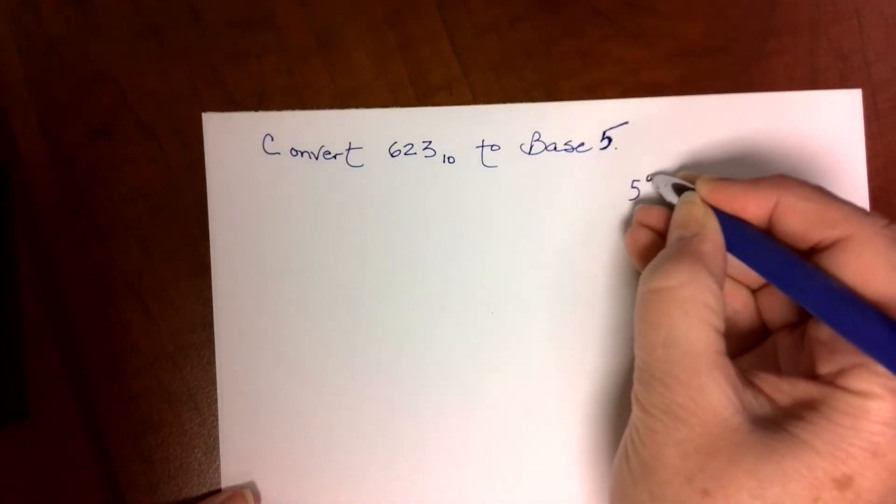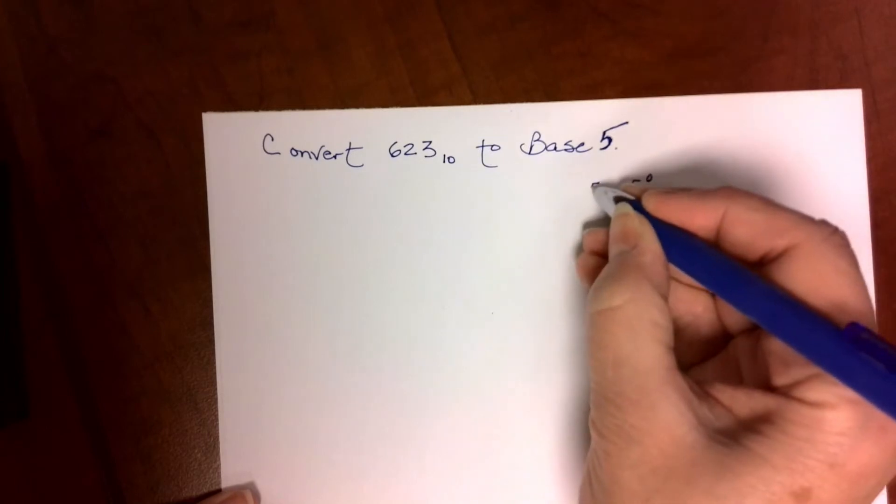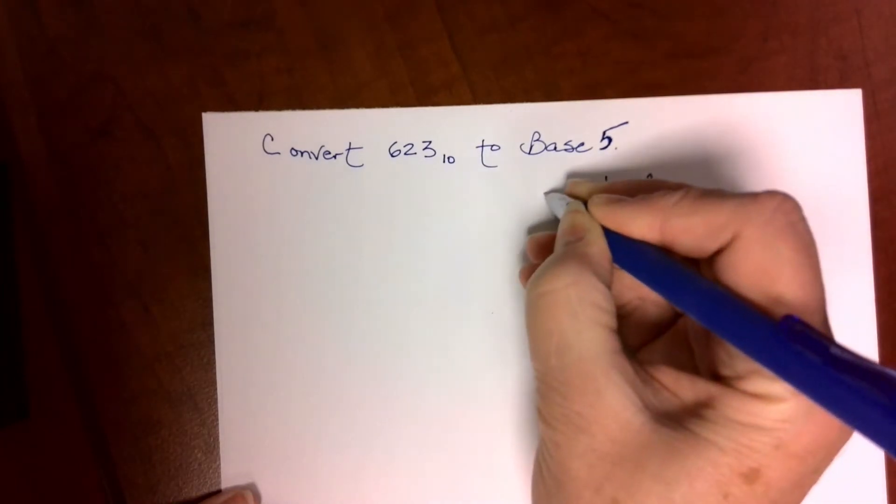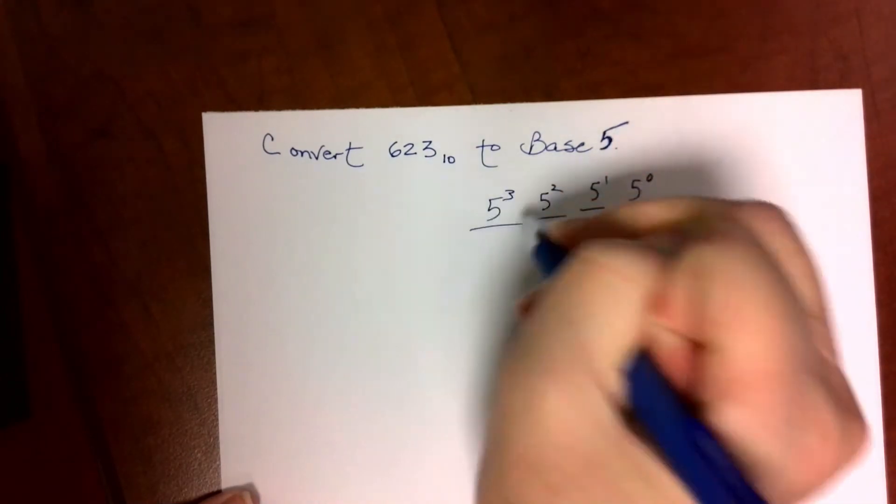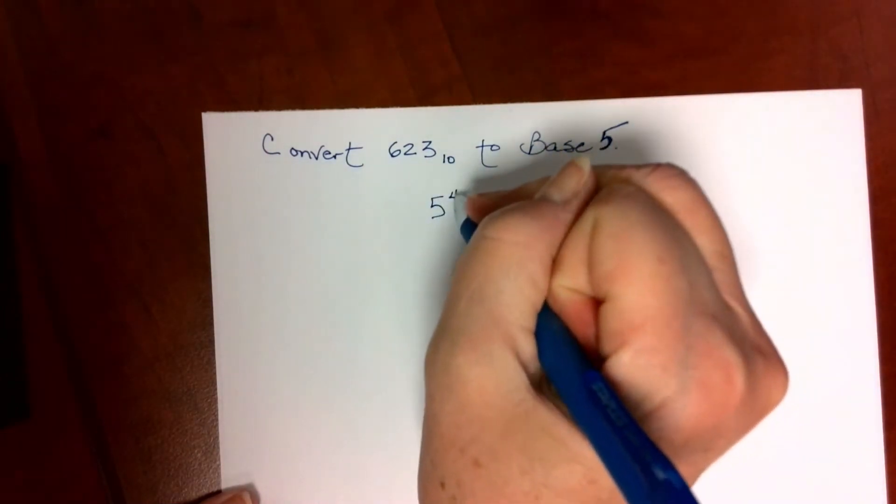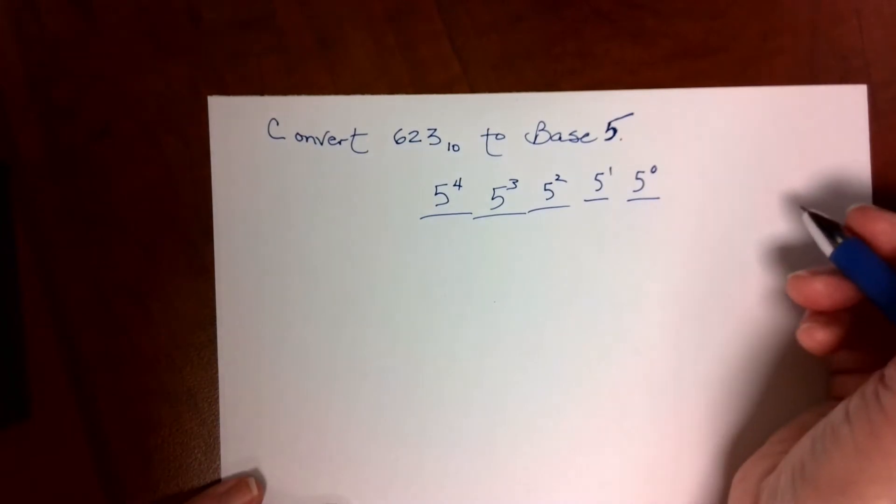The place value for base 5 is 1s, 5s, 5 squared, 5 to the third, even 5 to the fourth, and so on and so on.